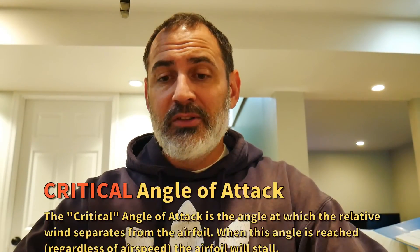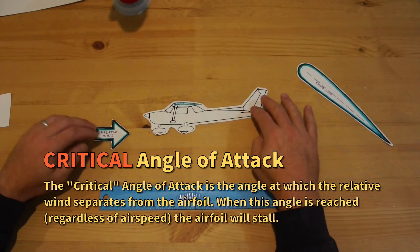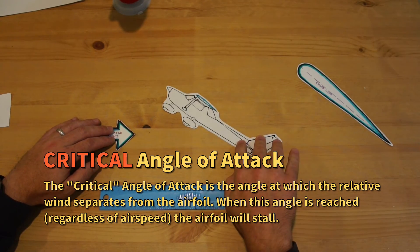Now most of us have been trained to use the airspeed indicator to tell us when the aircraft is going to stall. That's not what causes a wing to stall. You can stall a wing at any speed. You can be flying along at 150 miles an hour and yank on the yoke and it will turn up like this.